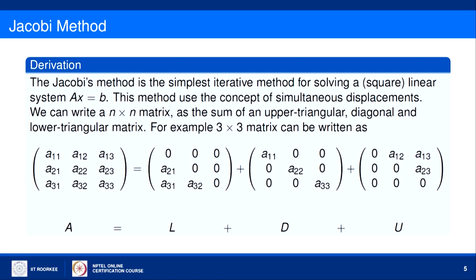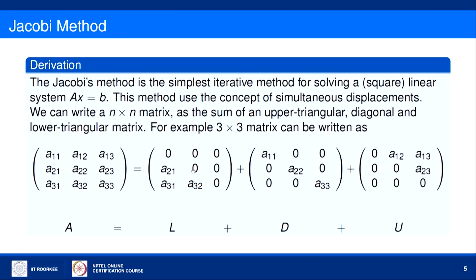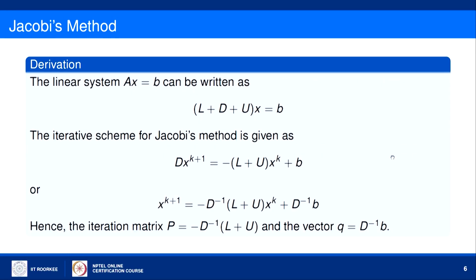First we will consider the Jacobi method, which is the simplest iterative method for solving a square linear system Ax = B, where A is a square matrix. This method uses the concept of simultaneous displacement. We can write an N×N matrix A as the sum of a lower triangular matrix L, a diagonal matrix D, and an upper triangular matrix U.